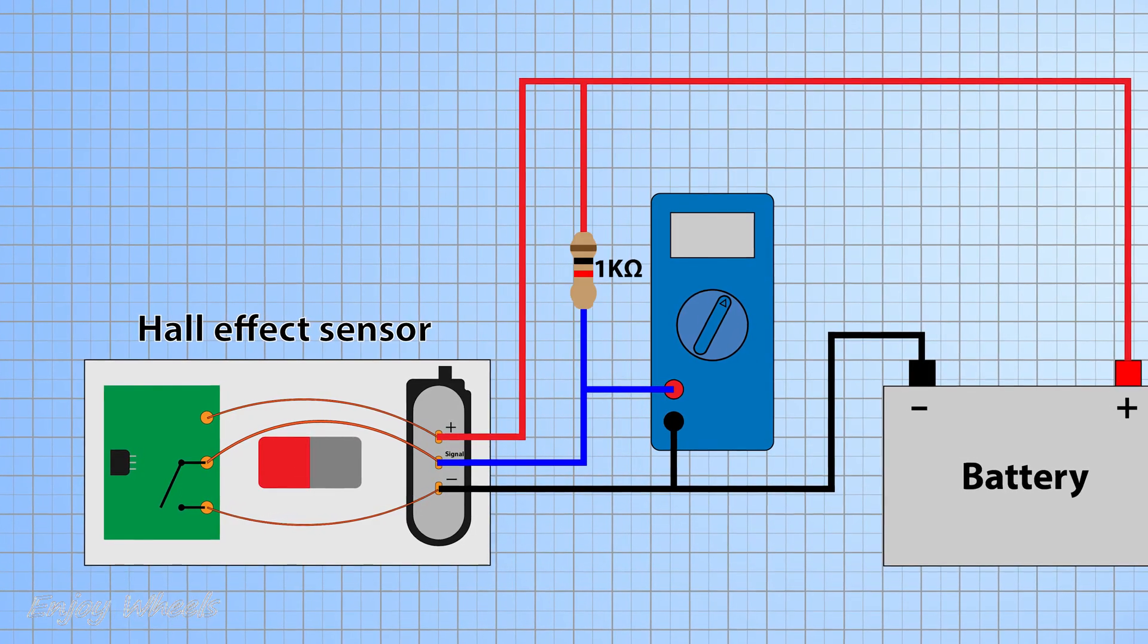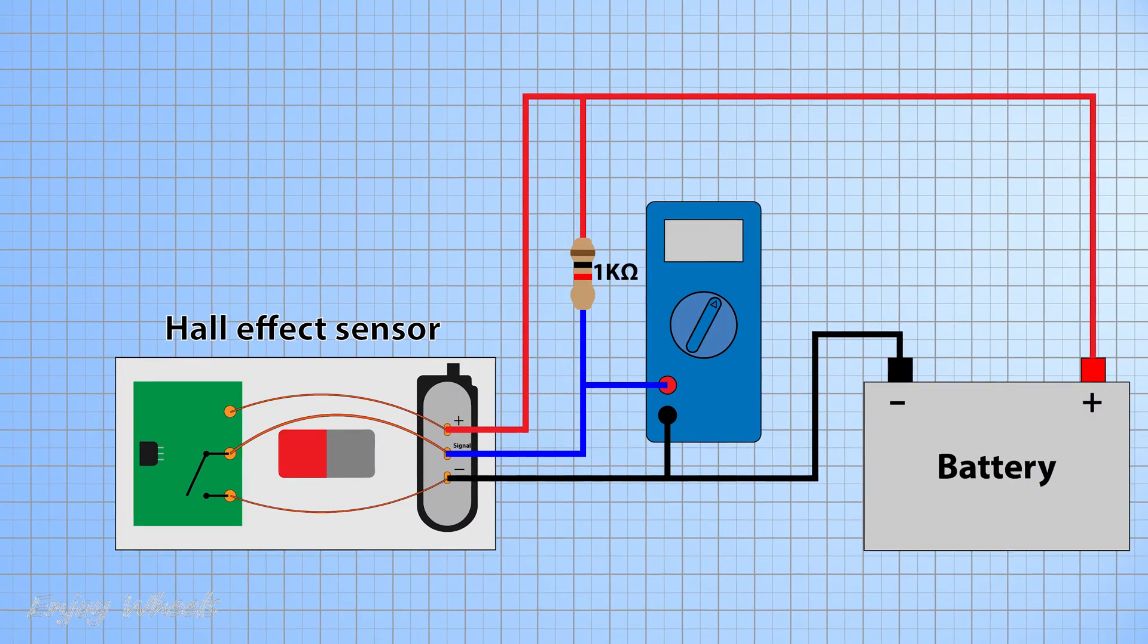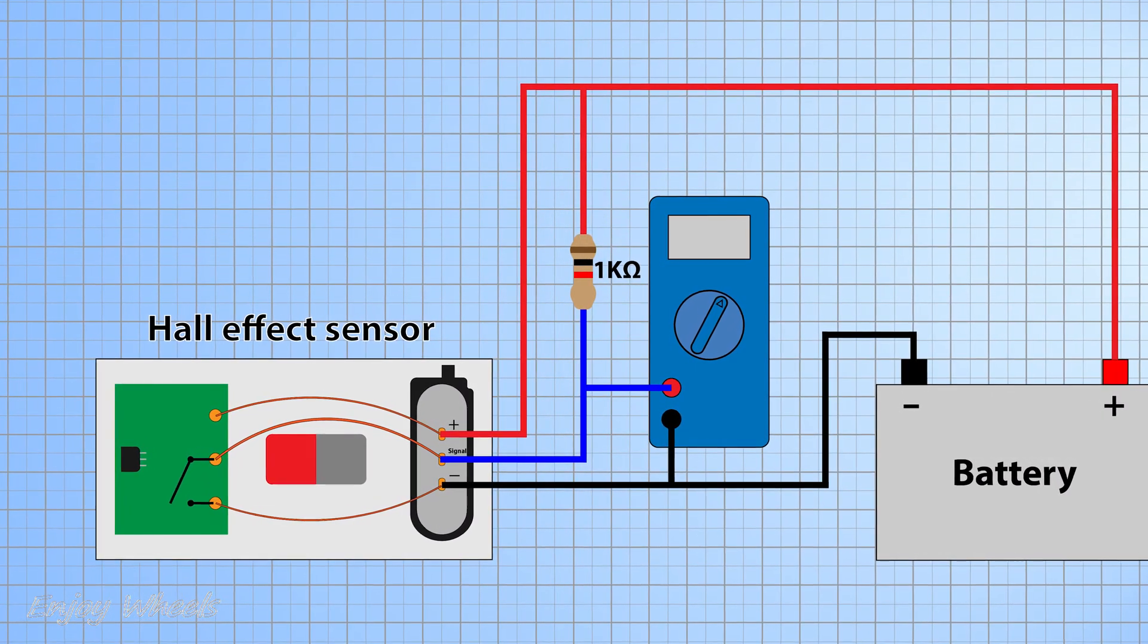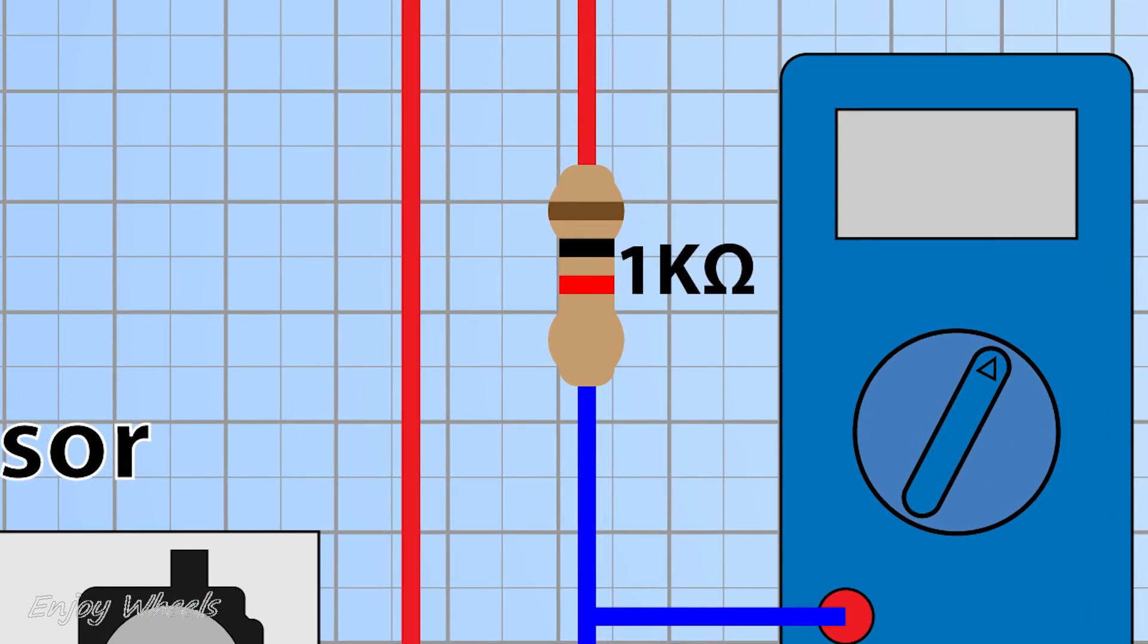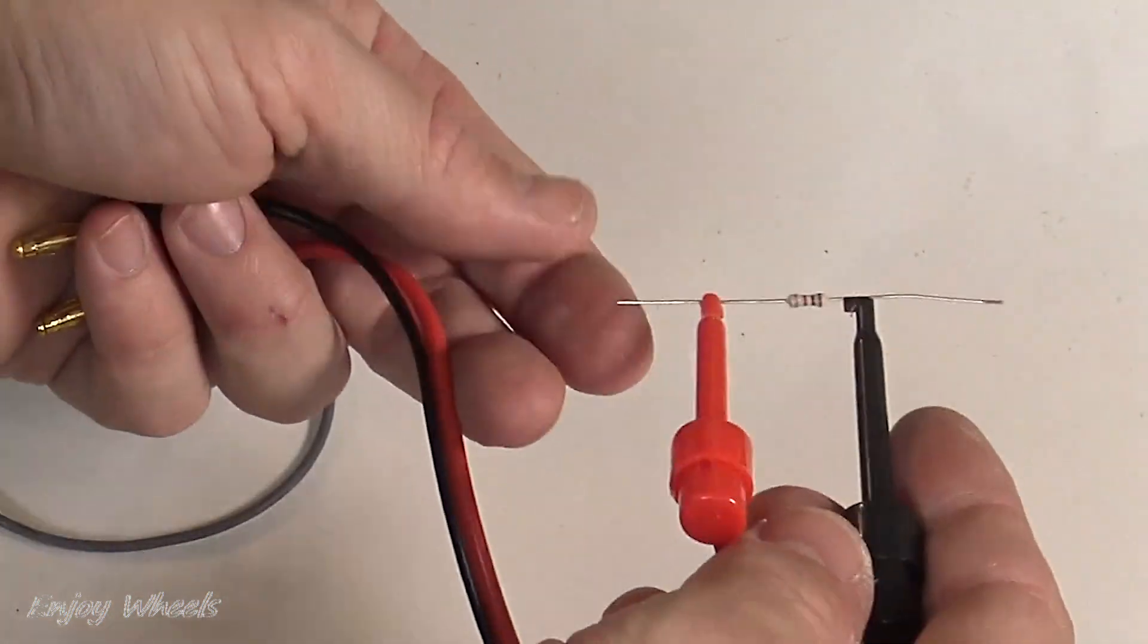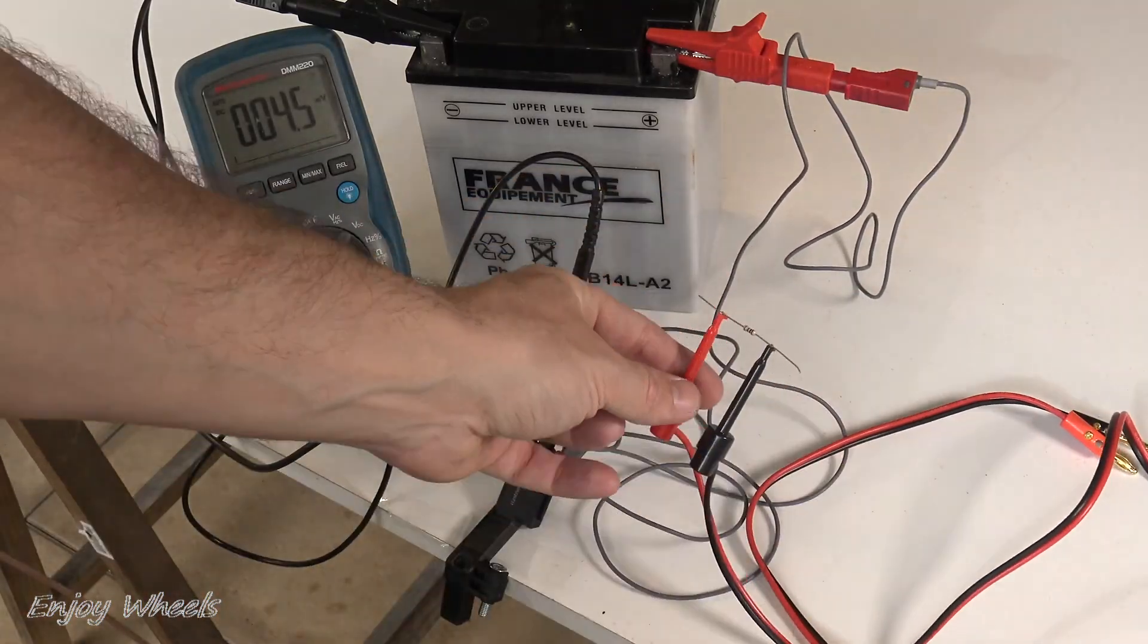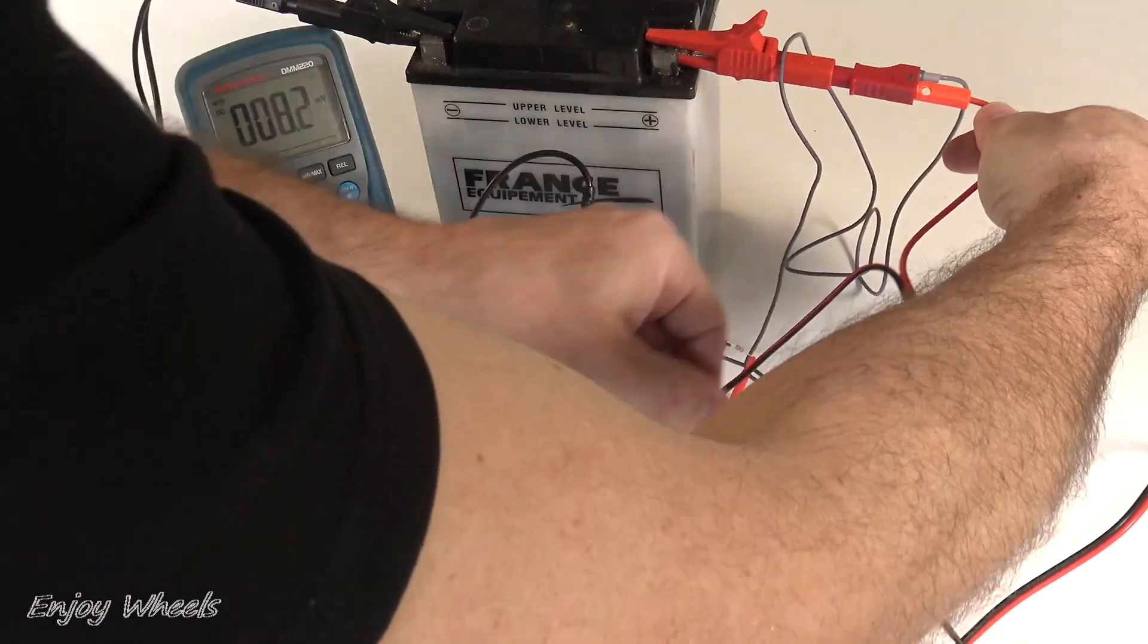It is connected like this between the signal and the battery positive pole. Its value does not need to be very precise. I chose 1 kilo ohm, it works very well. It has brown, black, red for young electronics engineers. So here it is. And I connect it on one side to the positive pole.